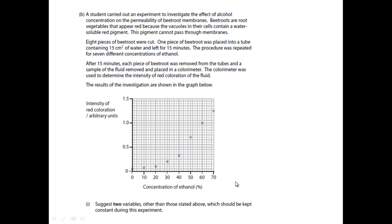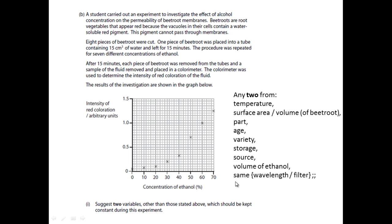There are a number of things that have not been mentioned in the method. Anything from the temperature of the ethanol, the surface area or the volume of the beetroot, the part of the beetroot that was used, potentially the age, the variety, how it was stored and the source where you got it from. The volume of ethanol, although the concentration is the variable that you alter, the volume of ethanol in each case must be the same and they must be measuring the same wavelength of light in the calorimeter, so any two of those are valid.